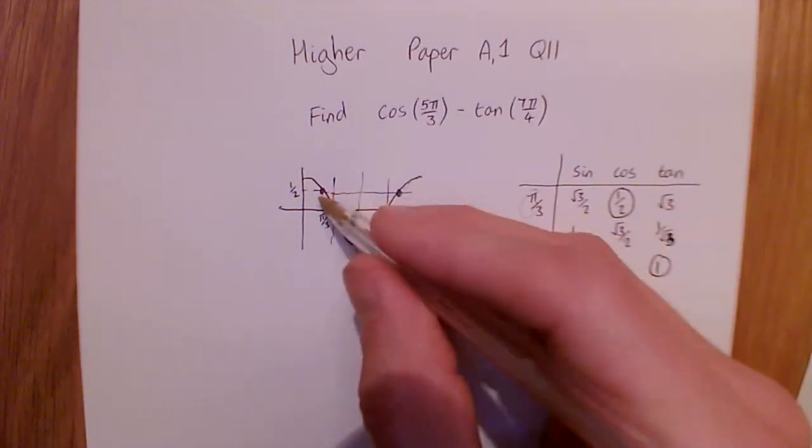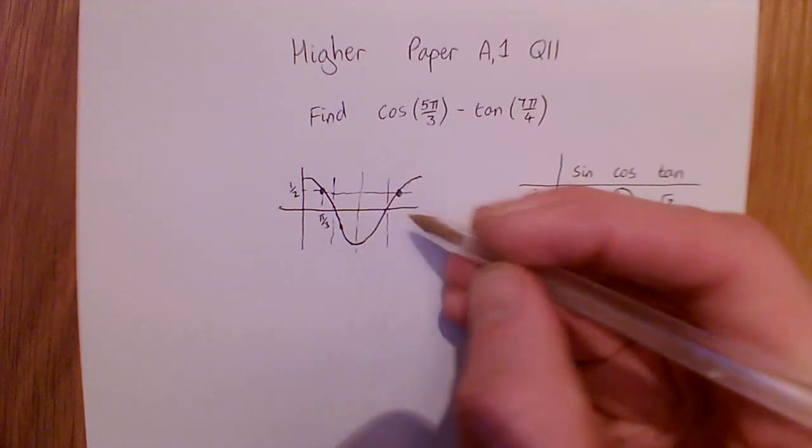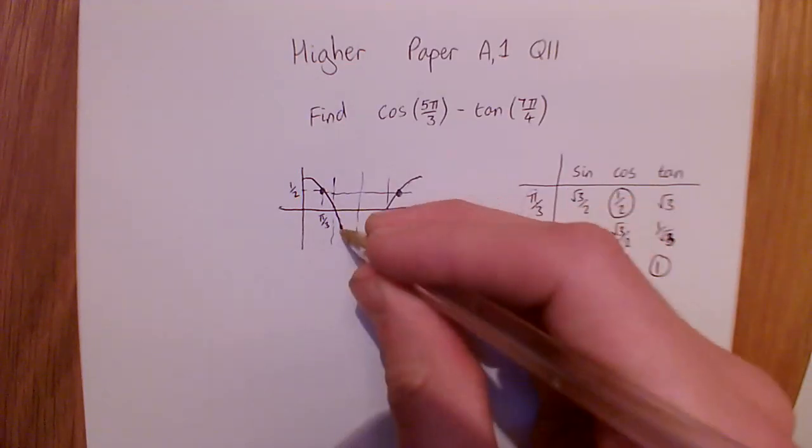Equally, down here, in the kind of mirrored part of the graph, there is a place where it equals minus a half. And down here, it would equal minus a half.